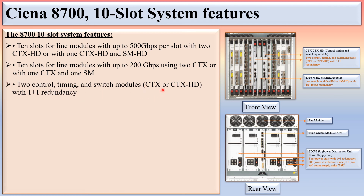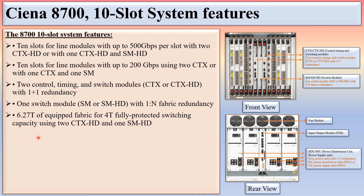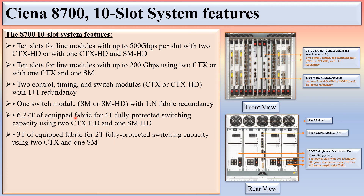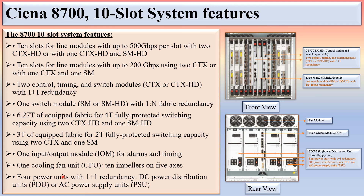There are two control timing and switching modules (CTS or CTSHD) with 1+1 redundancy, and one switch module (SM or SMHD) with 1-to-N fabric redundancy. Using 2 CTSHD and 1 SMHD provides 6.27 terabytes of equipped fabric for fully protected switching capacity; using 2 CTS and 1 SM reduces this to 3T. There is one IOM for alarm and timing, one cooling fan module with 10 impellers on 5 axes, and 4 power units with 1+1 redundancy supporting DC or AC power supply.